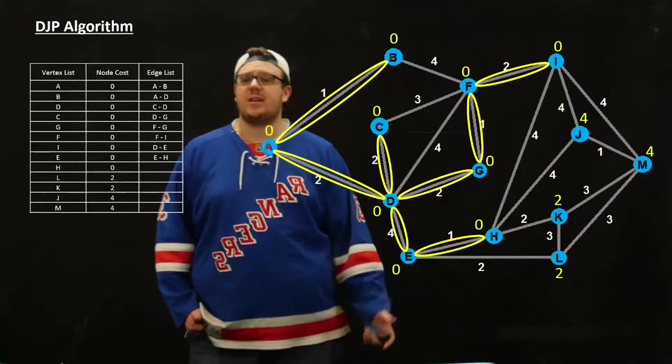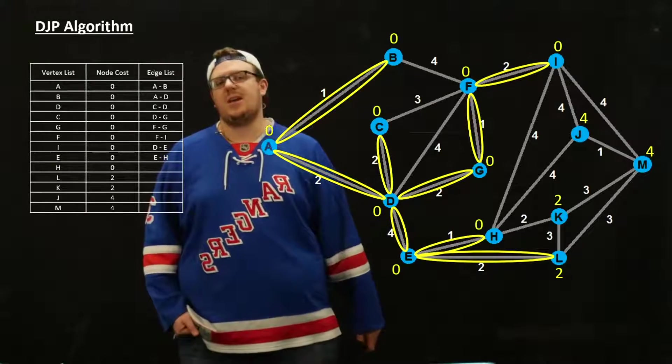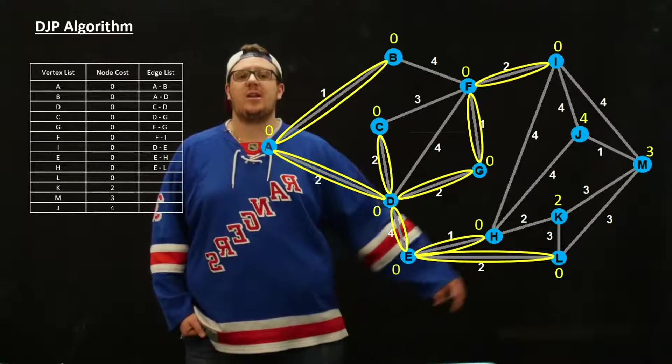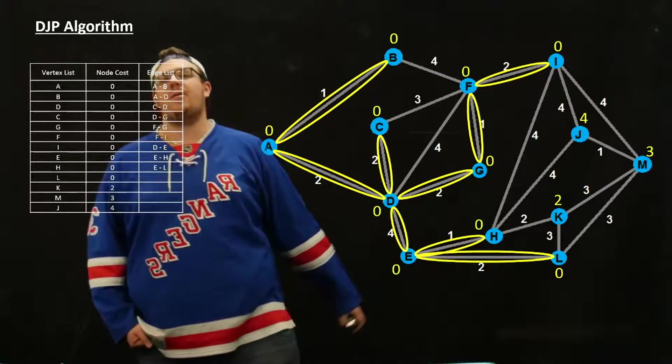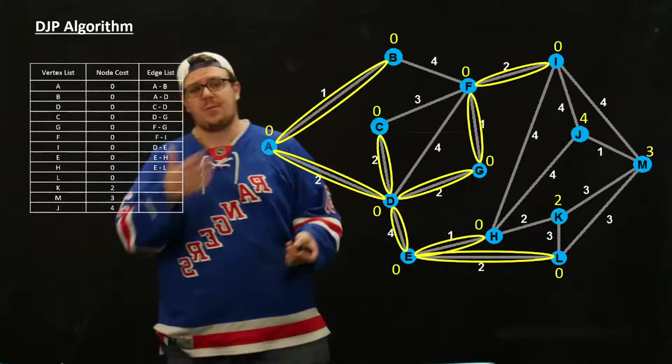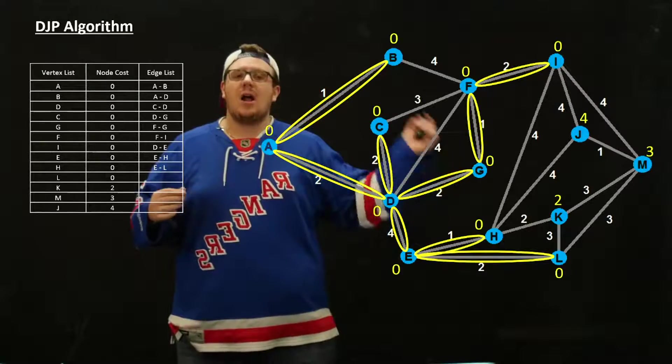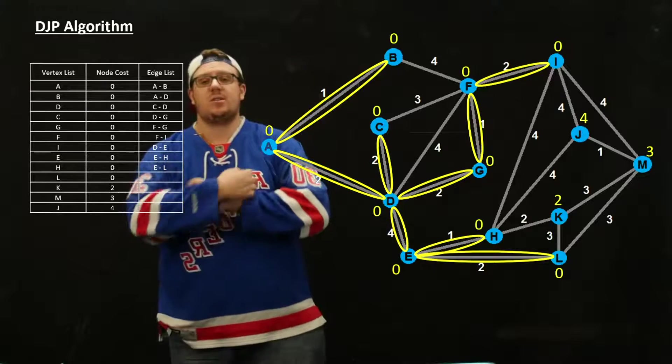The next smallest thing we have here is L, so we're just going to put L into our graph. Update L as zero, and then we can update M as being a distance 3 away now. And we don't update K because K is actually closer to H, so we keep that at 2.